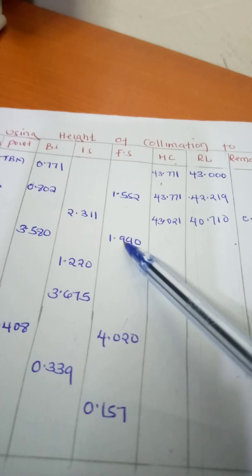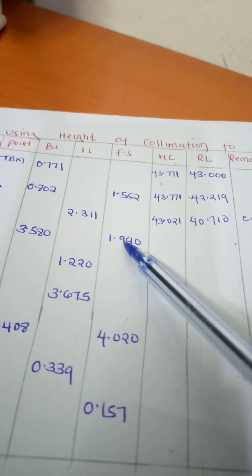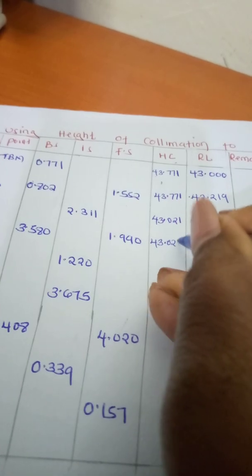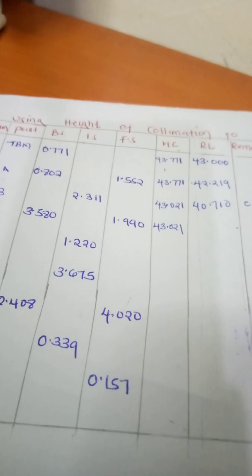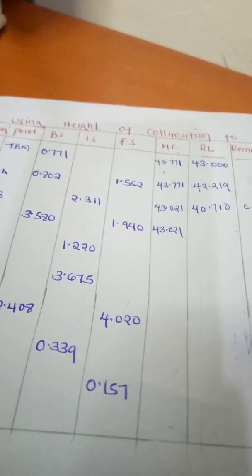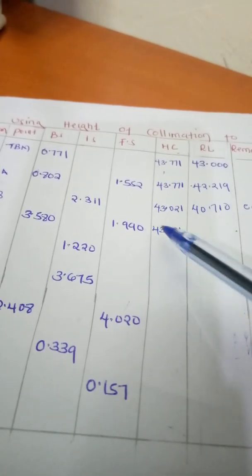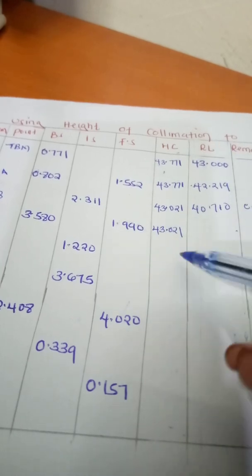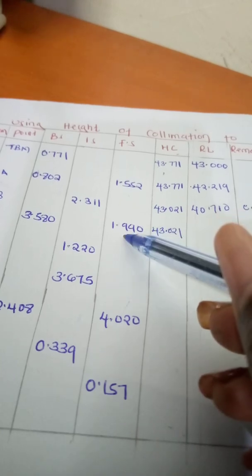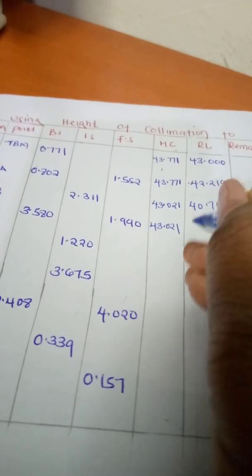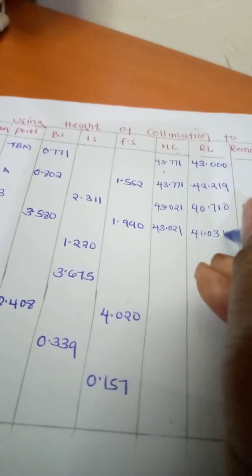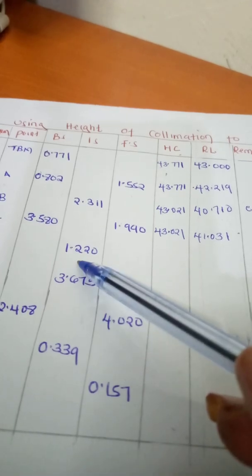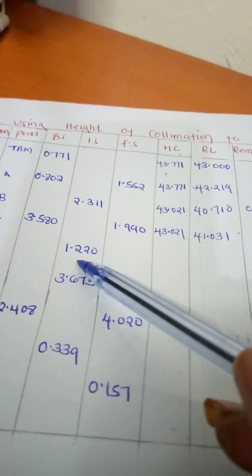Moving to point C, the height of collimation remains 43.021. The reduced level will be the height of collimation minus the foresight, which is 43.021 minus 1.990, giving us 41.031. We then have another change point.